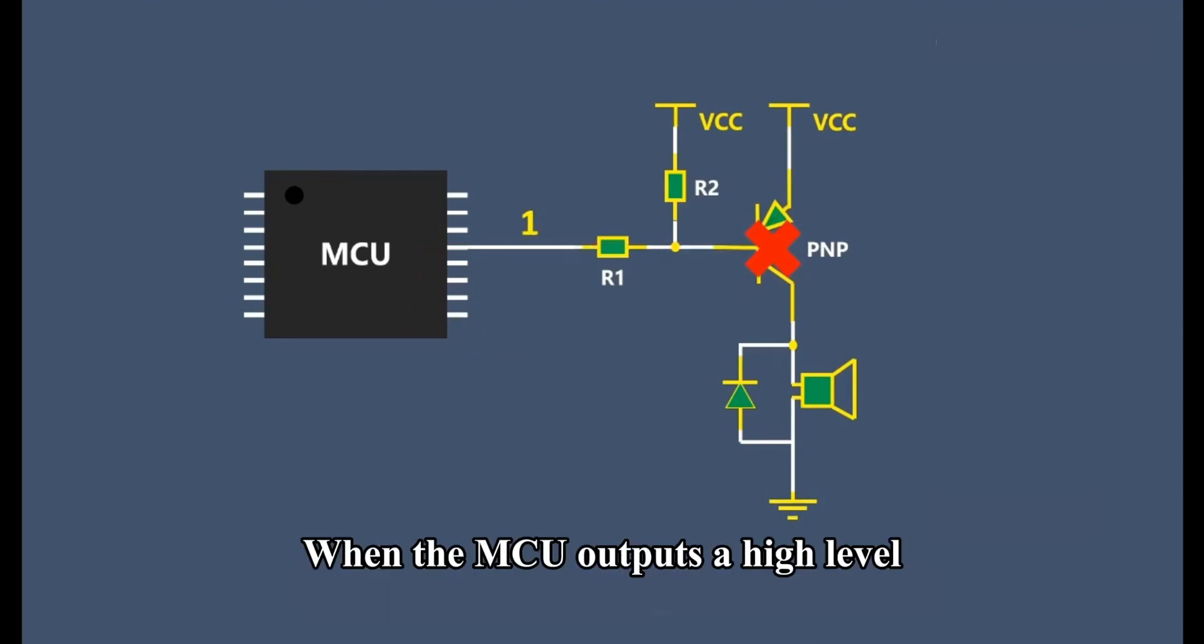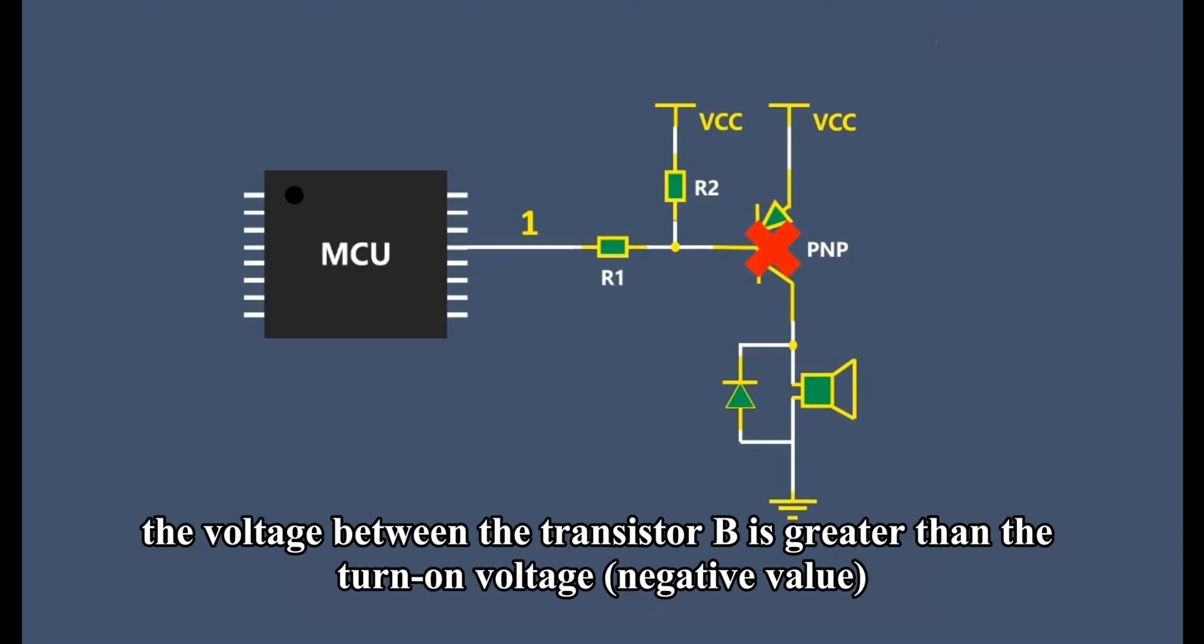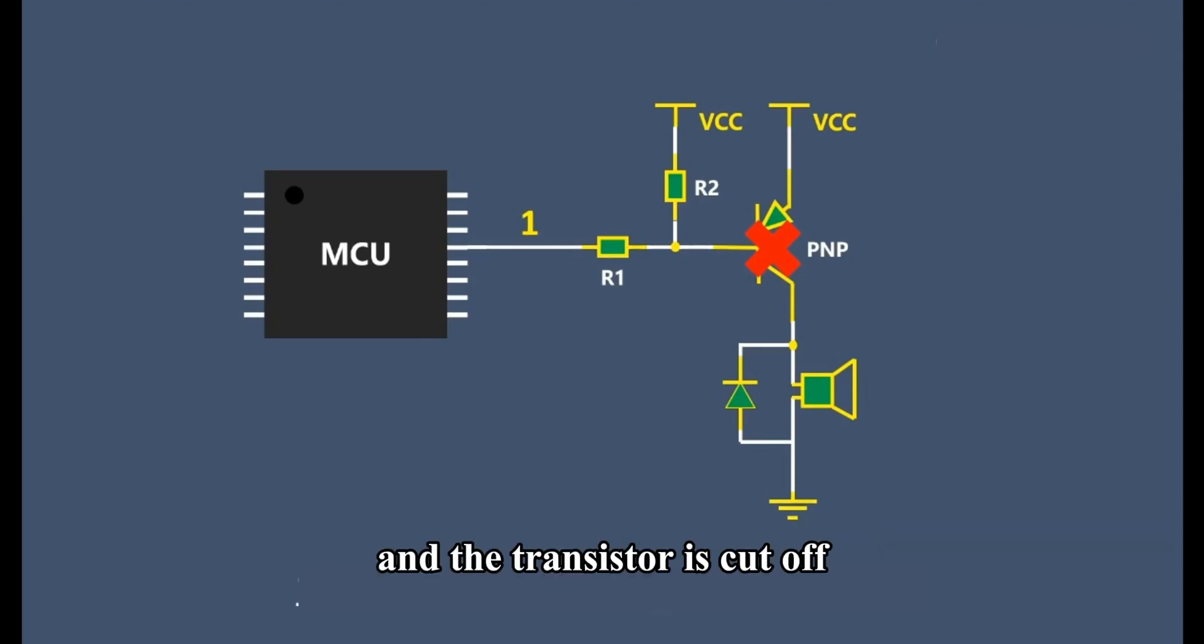When the MCU outputs a high level, the voltage between the transistor base and emitter is greater than the turn-on voltage, and the transistor is cut off. This depends on the situation.